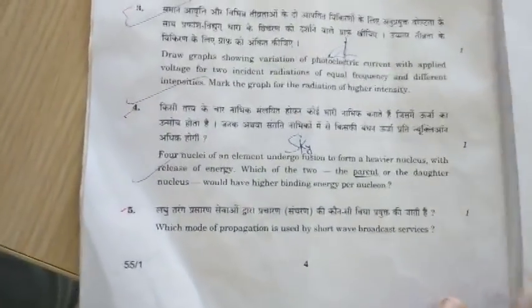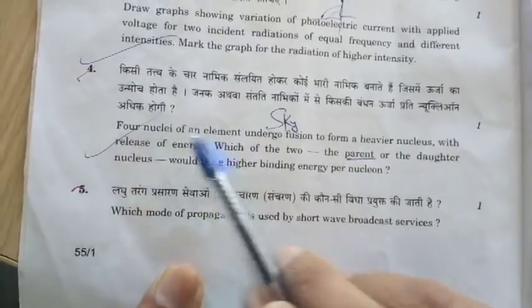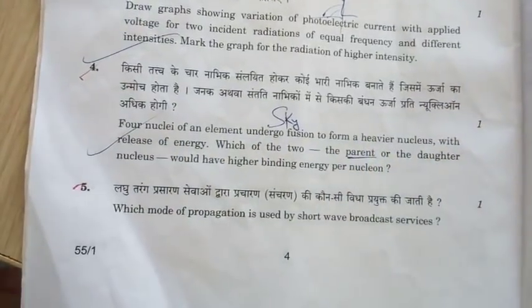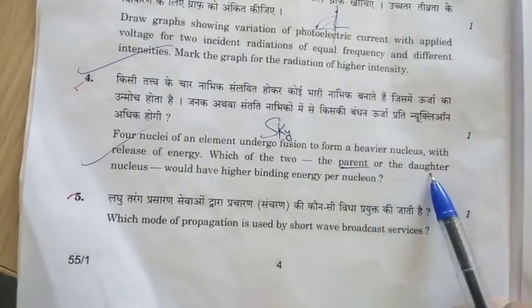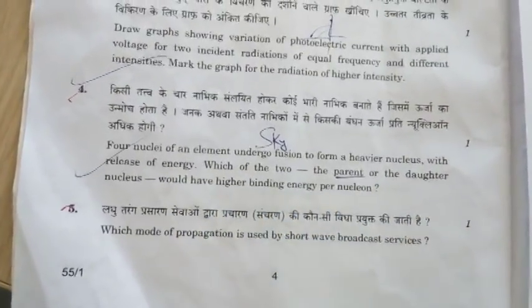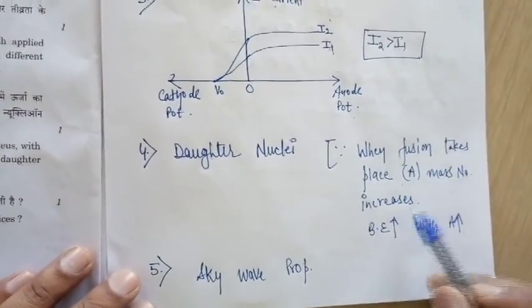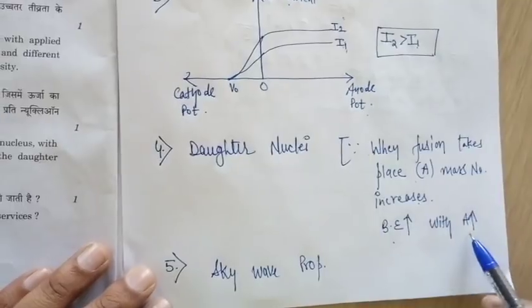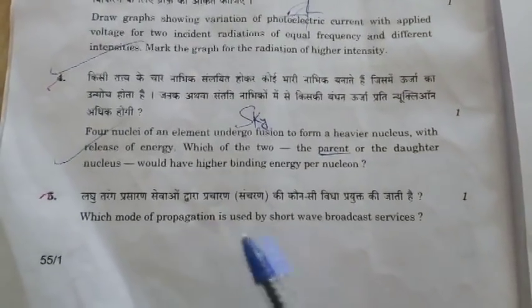Question 4: four nuclei fuse together to form a heavy nucleus — which has higher binding energy per nucleon, parent or daughter nuclei? The answer is daughter nuclei, because when fusion takes place the mass number increases and binding energy increases with mass number.